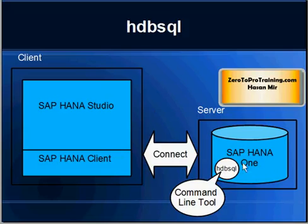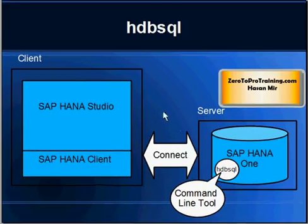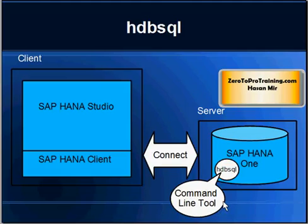In this session we will make a connection to SAP HANA database through HDBSQL, mainly to verify if the database is up and running properly. In the previous session we started the database, so it should be up. We will verify that, connect to the database, issue some basic commands, and then exit the tool.